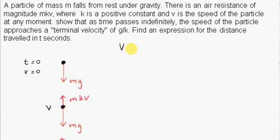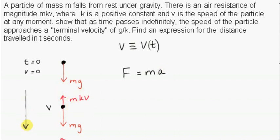We need to get the speed of the particle v as a function of time. To do that, we consider the acceleration of the particle. We apply Newton's second law: the resultant force on the particle equals the mass times the acceleration. We are dealing with vectors in one dimension, so we take the downward direction as positive.